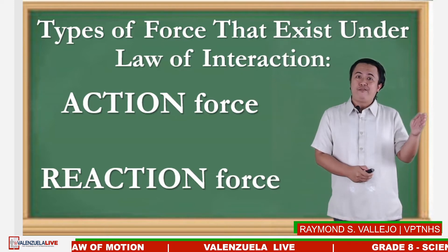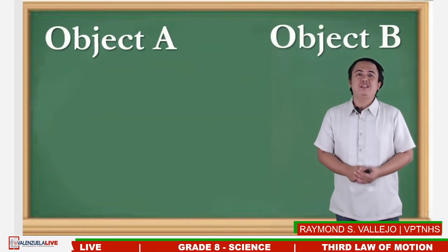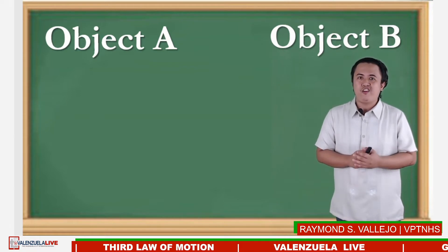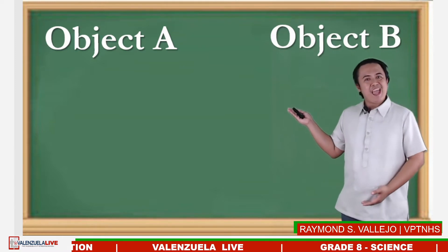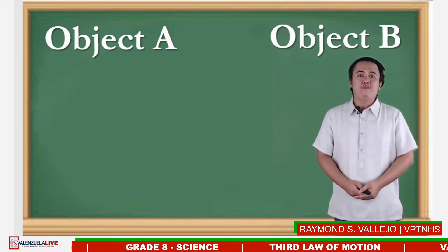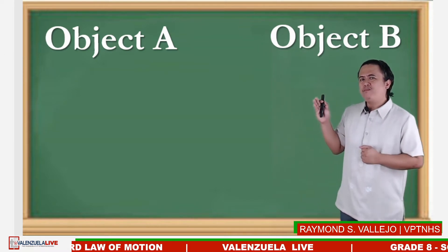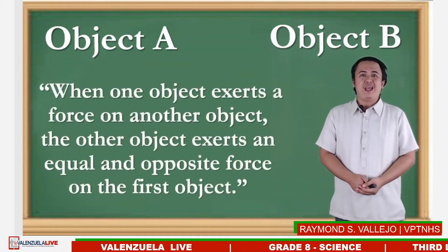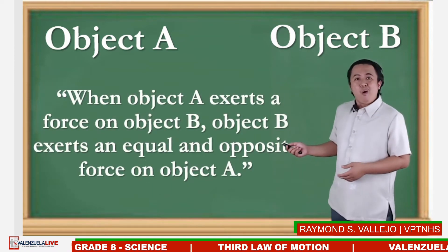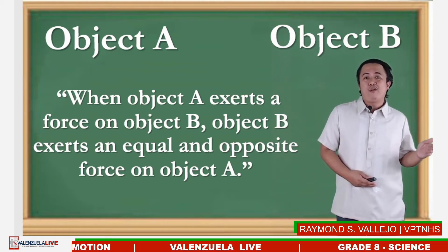One object exerts an action force while the other object exerts a reaction force. Before describing these two forces, we must identify the two objects involved in the interaction. We can identify them as object A and object B. When object A exerts a force on object B, object B exerts an equal and opposite force on object A.